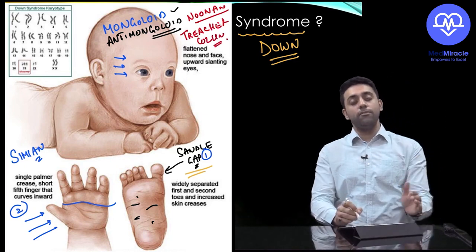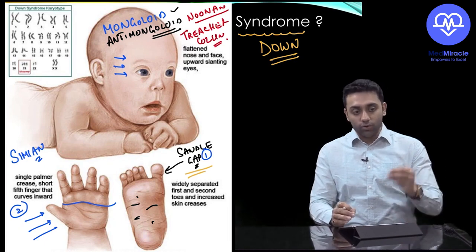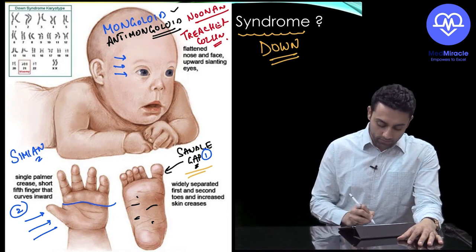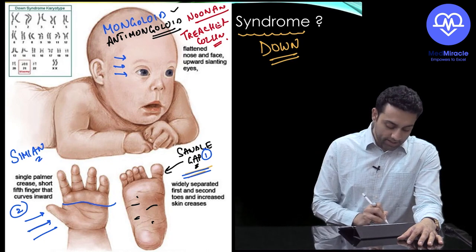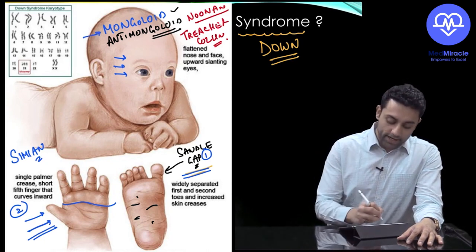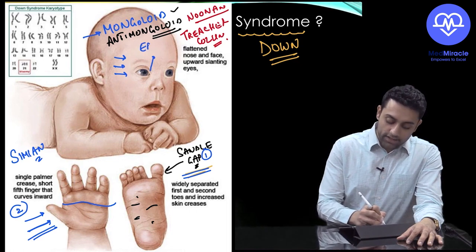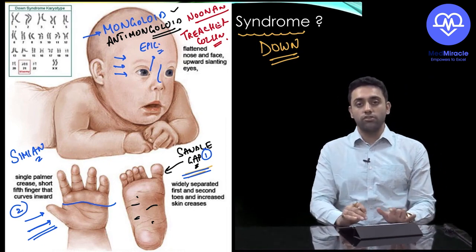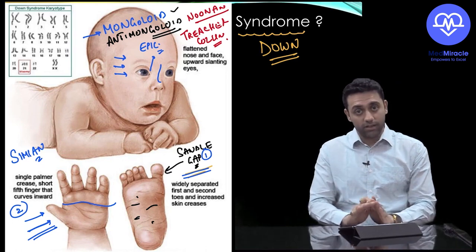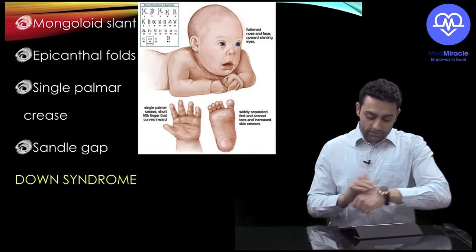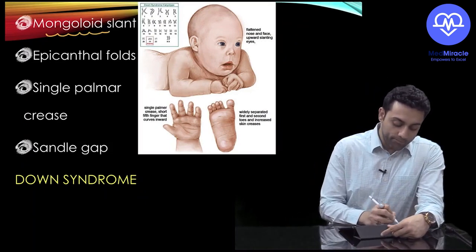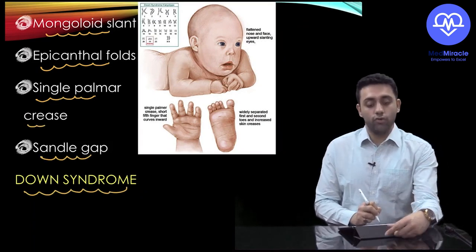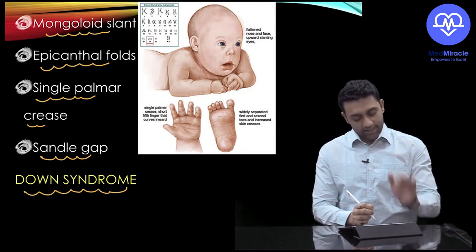To summarize what this picture covers for Down syndrome: number one, sandal gap; number two, single palmar crease; number three, mongoloid slant; number four, epicanthal folds; and number five, depressed nasal bridge. These are the basic findings visible in the picture of Down syndrome. There are other features too, but these are what this picture shows.